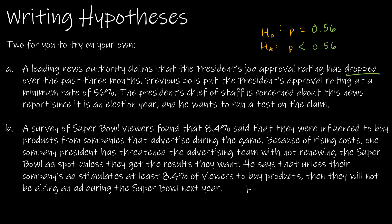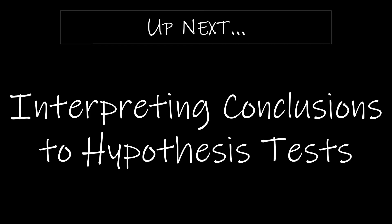The second question looks at Super Bowl ads. Here we're again looking at a percentage, so this is still P. It says 8.4% of viewers were influenced to buy products from companies that advertised during the game, so we assume that value hasn't changed: P equals 0.084. Remember, move two decimal places to write it as a decimal. Because of rising costs, one company president has threatened not to renew the ad unless they get the results they want — they need at least 8.4%. So we want that value to increase from 8.4%: H sub A: P is greater than 0.084. Coming up next, we'll delve further into interpreting conclusions of hypothesis testing.